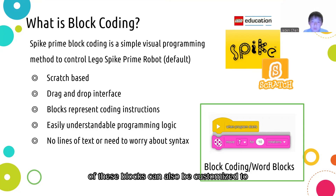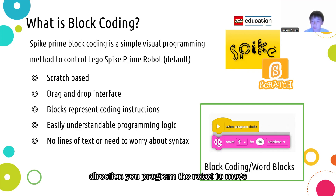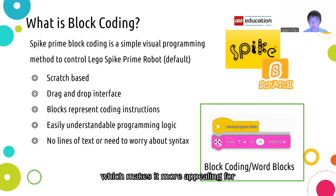Each of these blocks can also be customized to change what it exactly does. Like in the example in the bottom right corner with the movement block, you can change the direction you program the robot to move in, as well as how many rotations you want each wheel to go. This overall is a much easier system, which makes it more appealing for students new to robotics and coding.